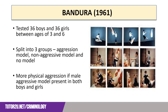Bandura's research tested 36 boys and 36 girls between the ages of three and six, all of whom were part of the Stanford University nursery. They were split into three different groups: one group who observed an aggressive model — that is, an adult who acted aggressively towards the Bobo Doll; a second group where the model acted non-aggressively towards the Bobo Doll; and a third, or control group, where there was no modelling behaviour displayed.